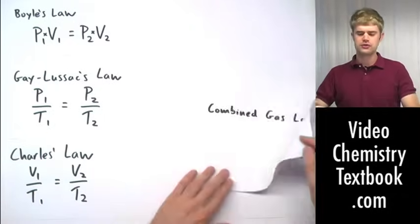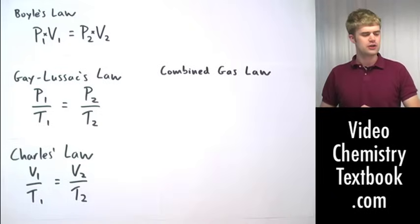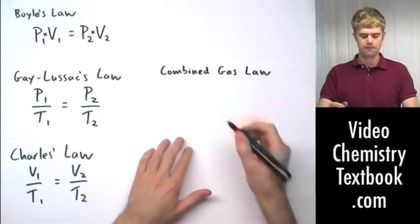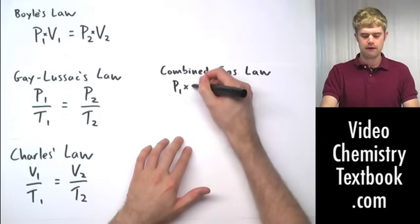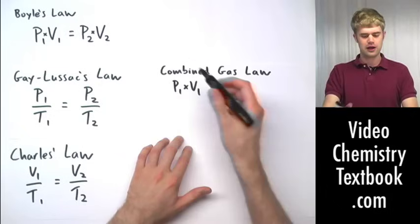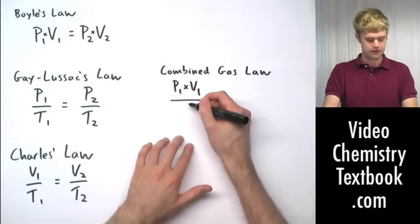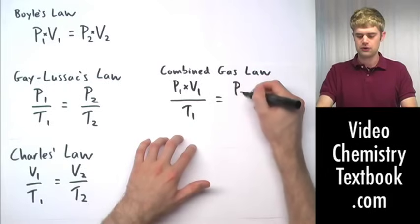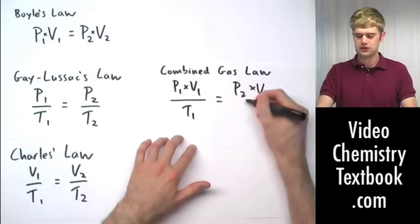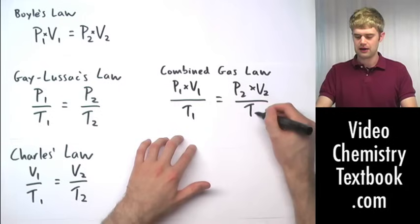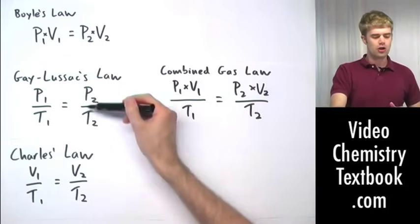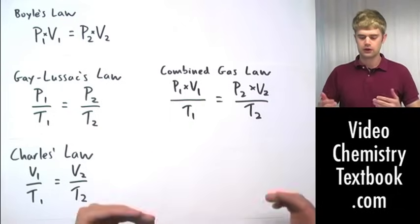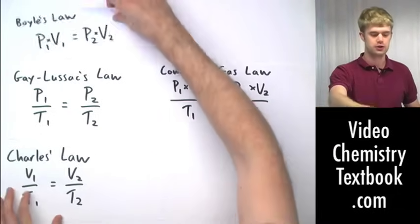So for that, we use the combined gas law, which is sort of a combination of all three of these laws, and you can see how I put it together. It's P1 times V1, that looks a lot like Boyle's law, divided by T1 equals P2 times V2 divided by T2. So it's like all of these three rules put together in one law, so that I can look at how these three variables respond to each other.